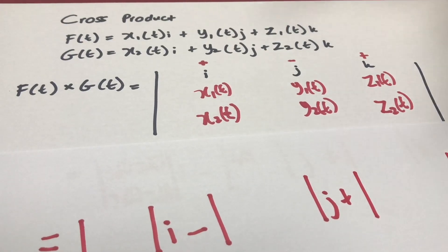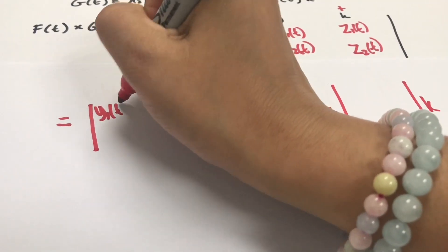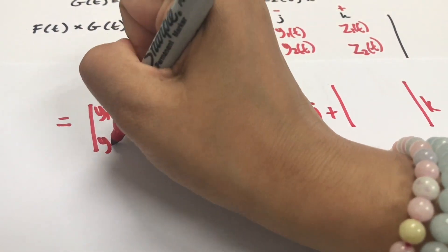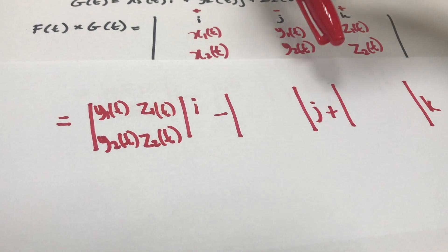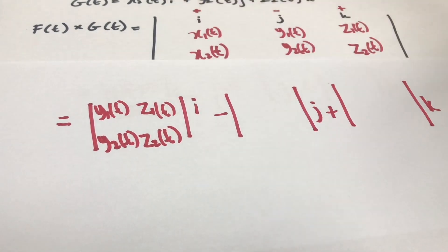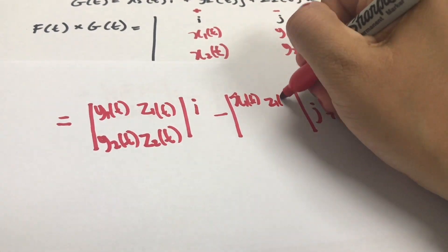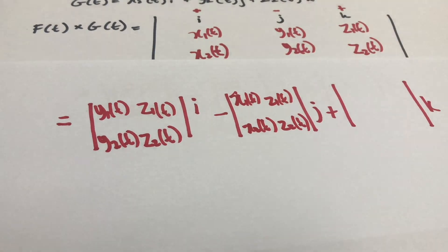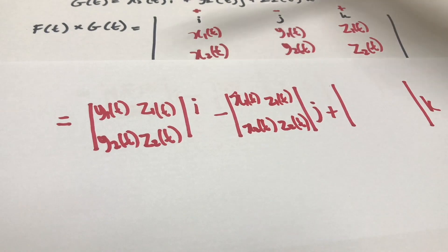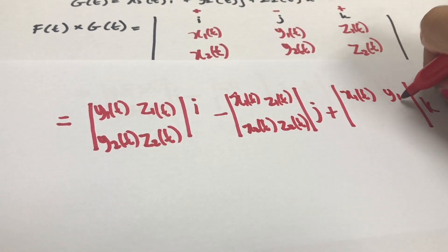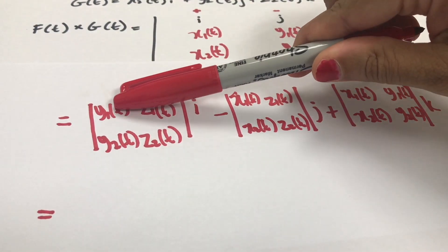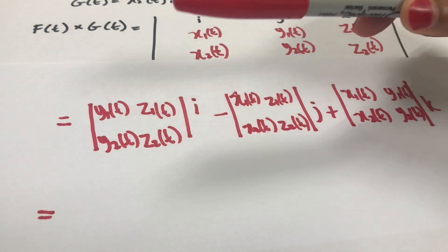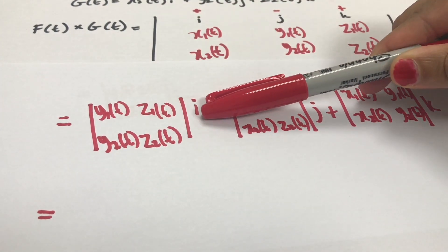What are these 2 by 2 matrices? We simply hide the first column and the first row for i — giving t and sin(t). Similarly, we hide the second column and the first row for j, and the third column and first row for k. Our answer would be y1(t) multiplied by z2(t) minus y2(t) multiplied by z1(t).